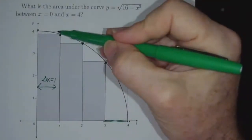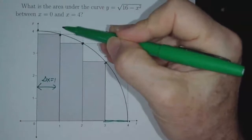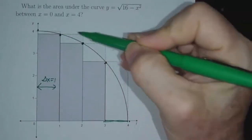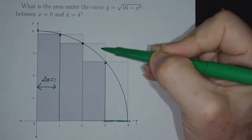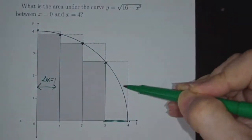The upper bounds are the areas of the lightly shaded regions. So this has area 4, this has area 3.87, this has area 3.46, this has area 2.65.